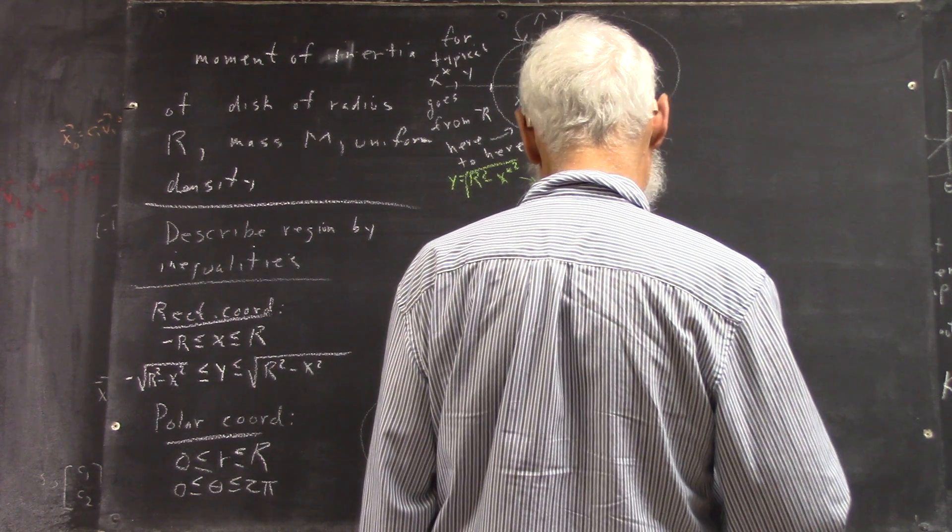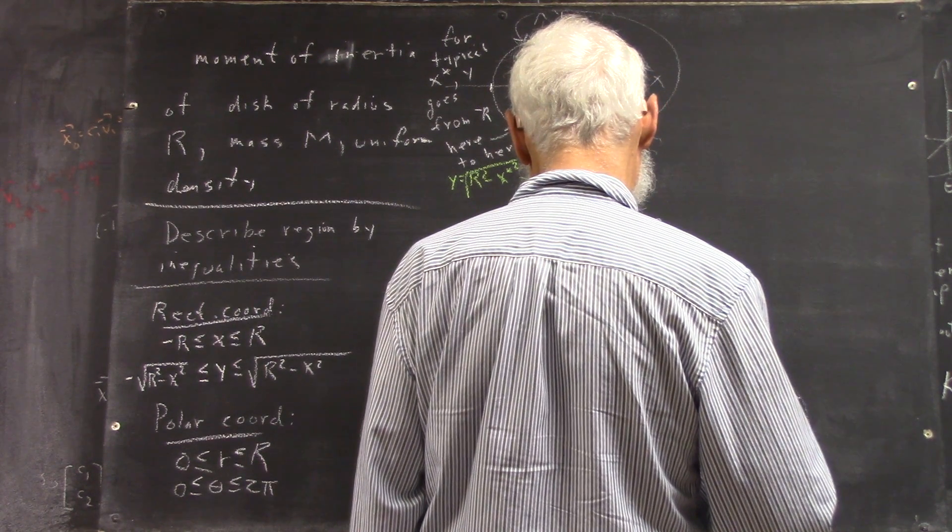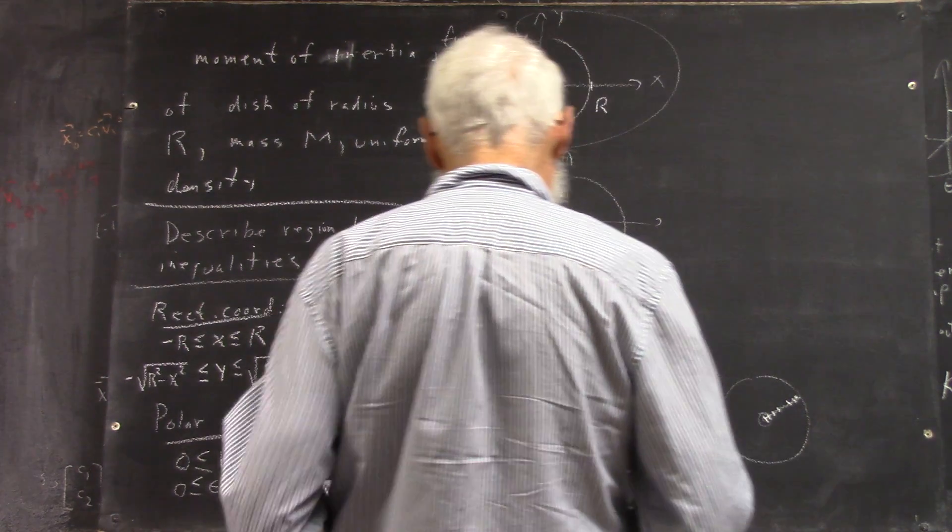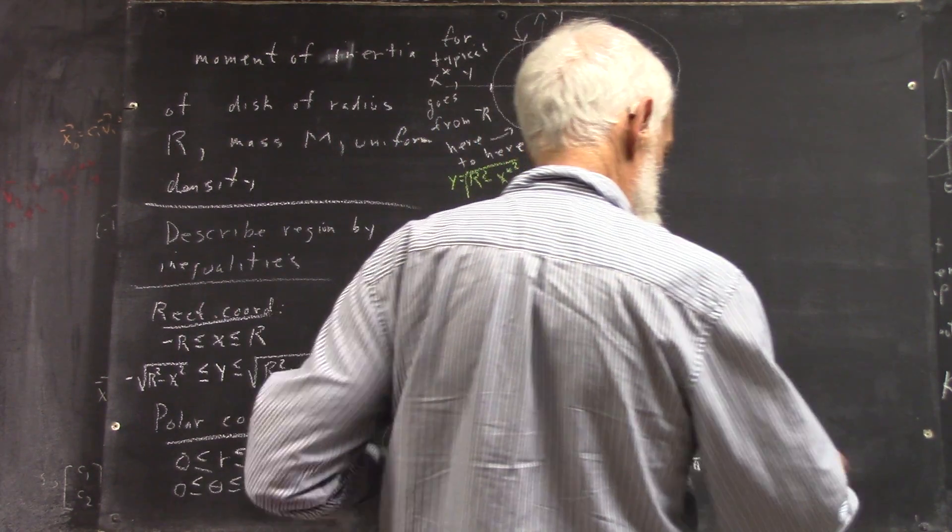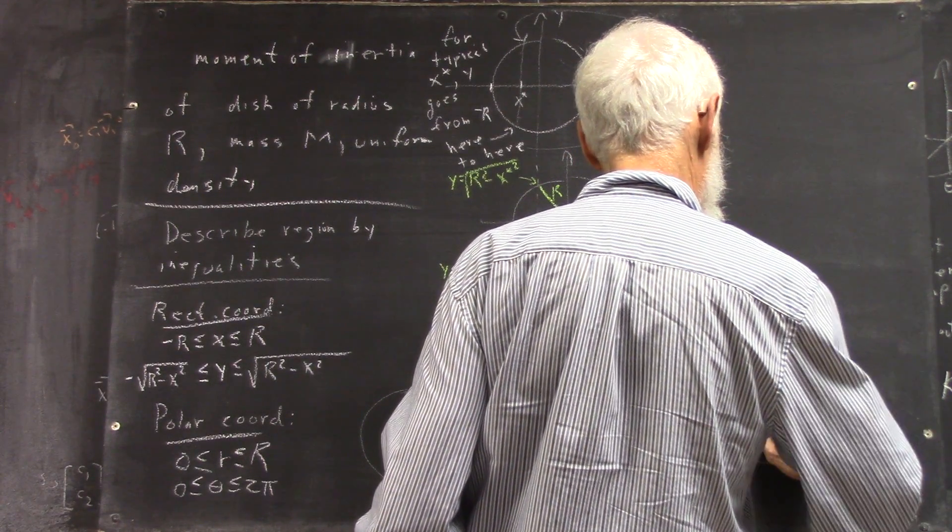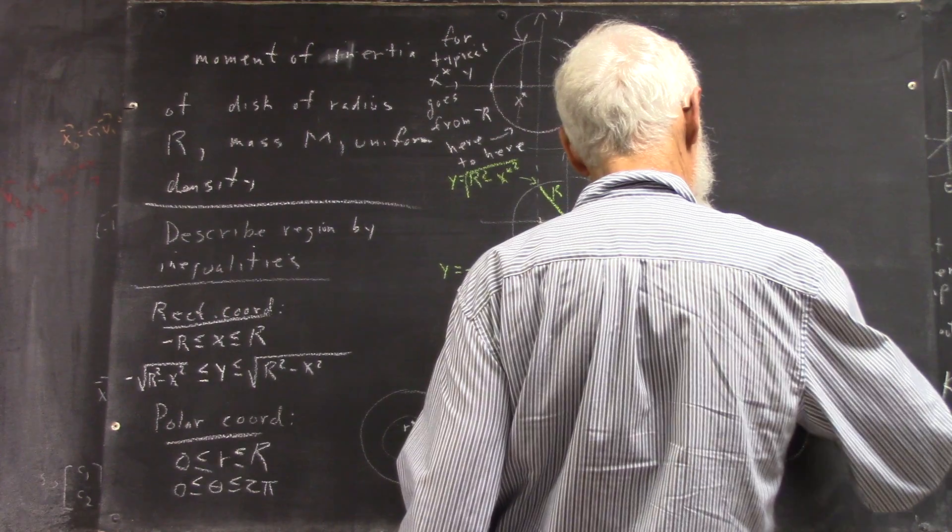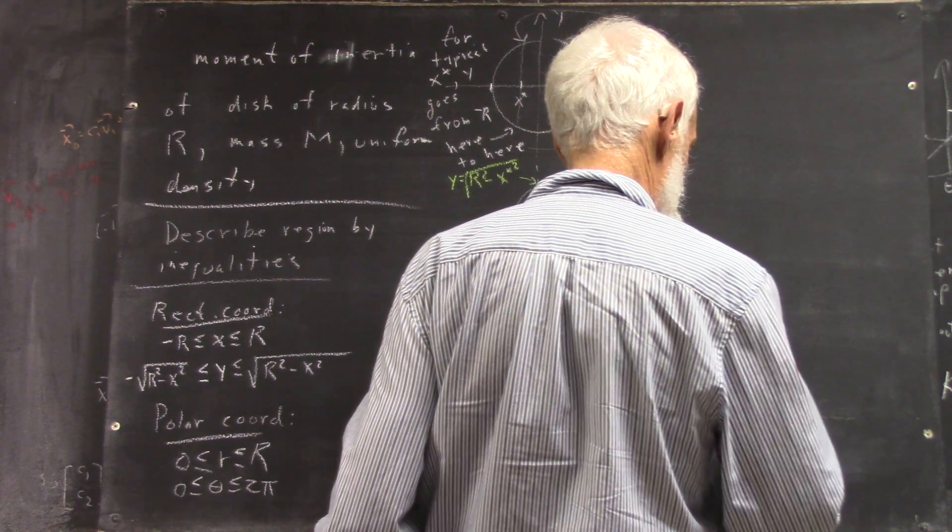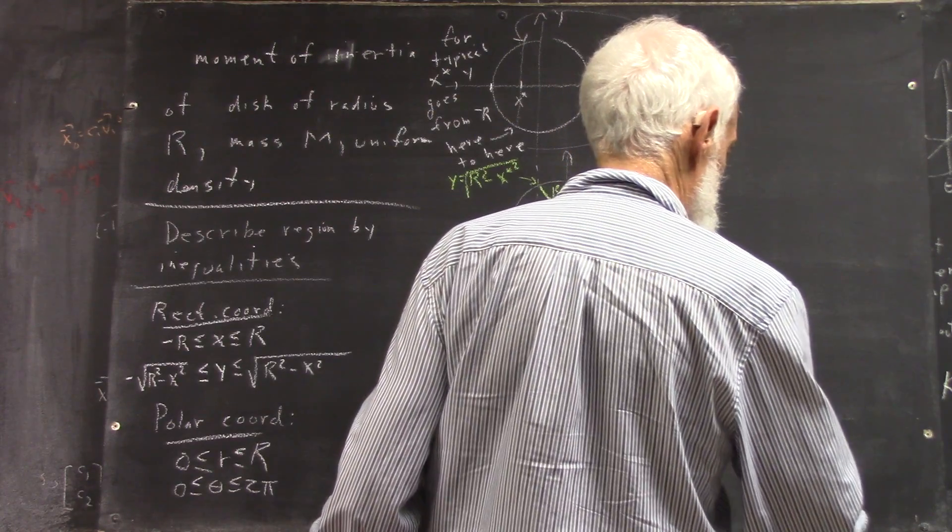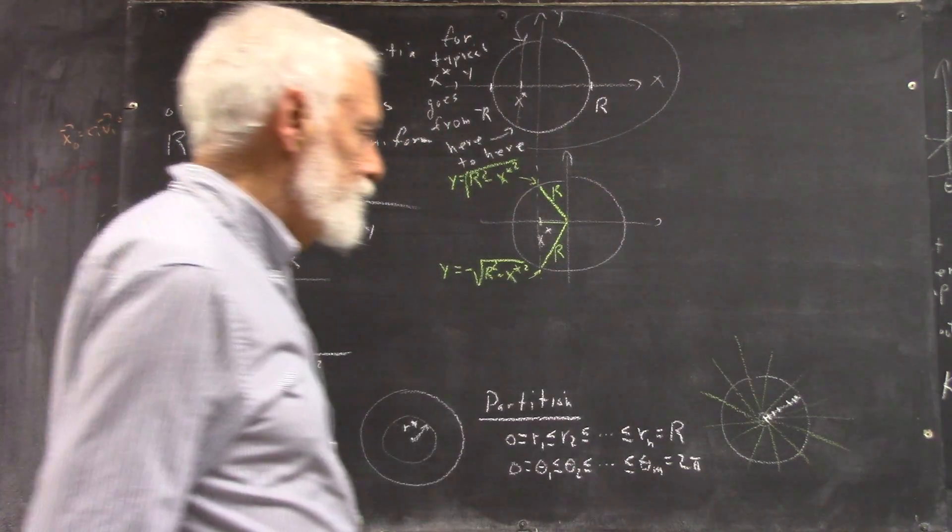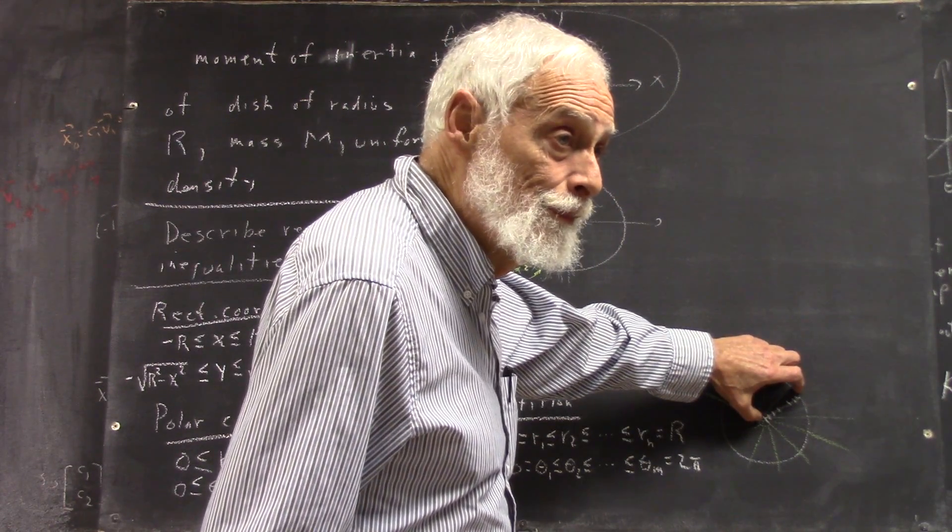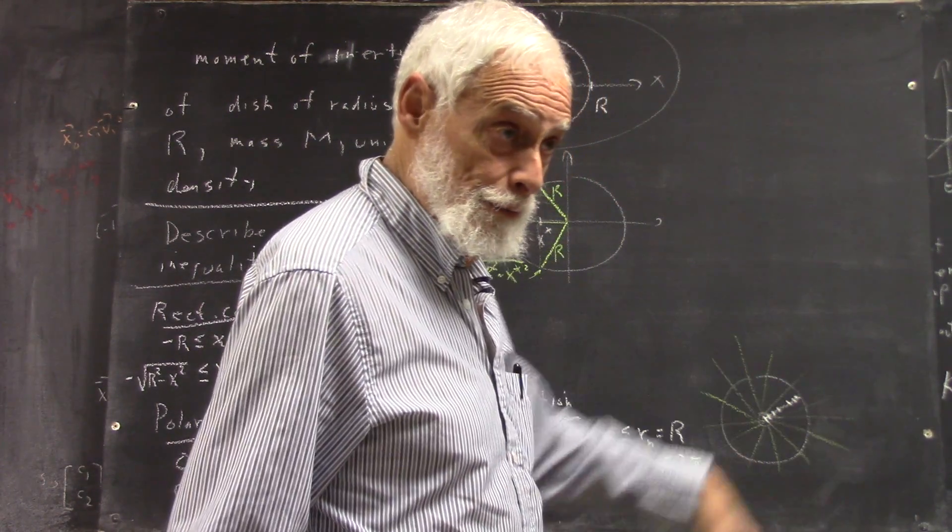So I'm going to draw it in a different color. Now, these are all radials, not always hitting them. Okay? So here's your r partition, and here's the theta partition.